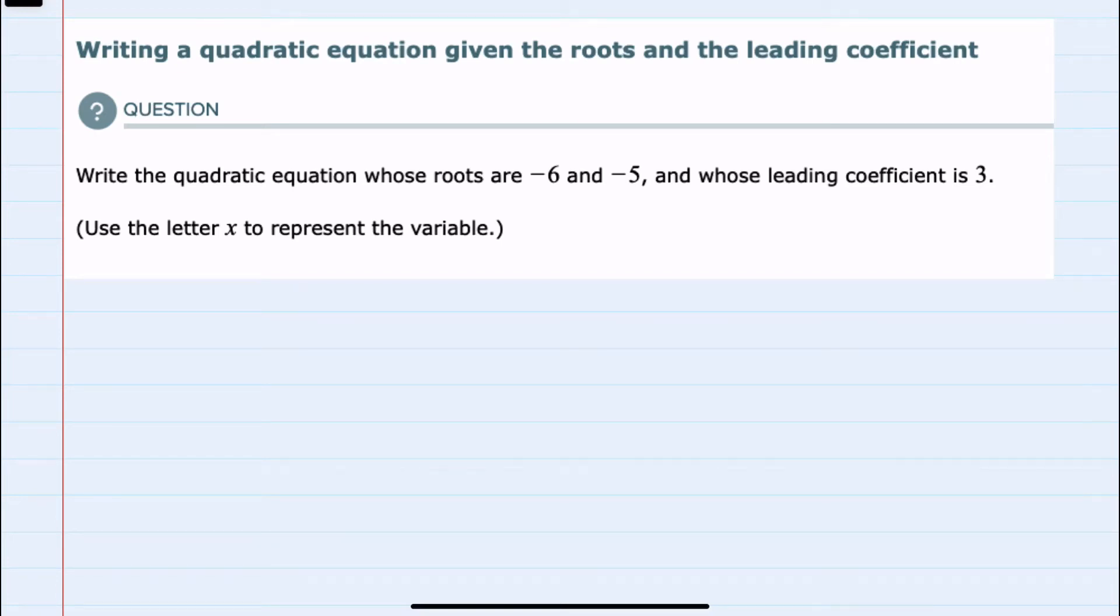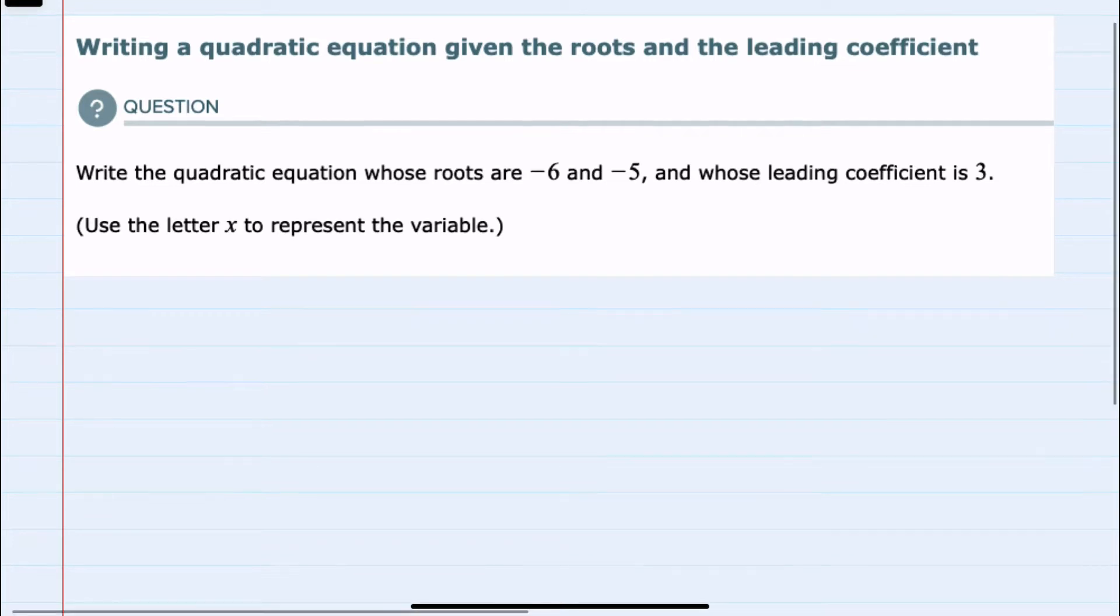In this video I'll be helping you with the Alex problem type called writing a quadratic equation given the roots and the leading coefficient. We're asked to write the quadratic equation whose roots are negative 6 and negative 5 with a leading coefficient of 3, using x for the variable.